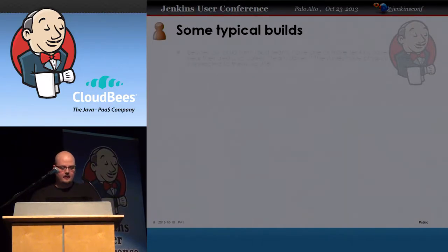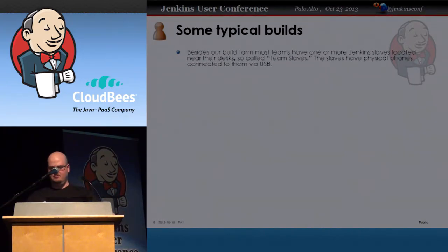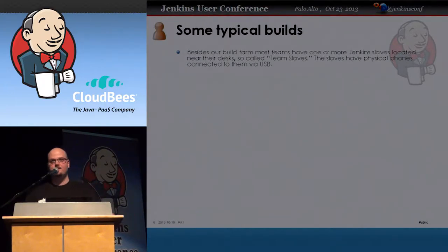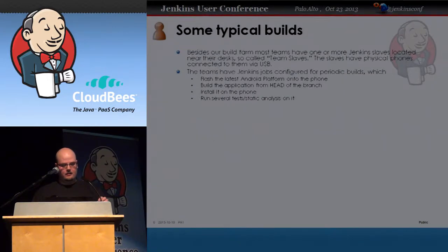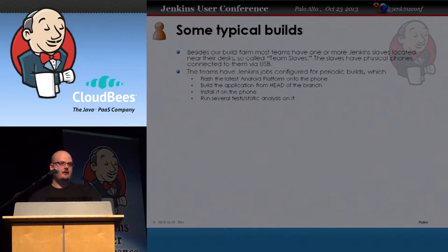Some of the typical builds in Jenkins: we have a build farm that supports building in general and also the Android emulator. Each team also has different slaves at their desks or close to their desks where they can plug in phones. Those slaves are connected to Jenkins with either direct scheduling or a label, so they can run builds and tests on an actual phone.